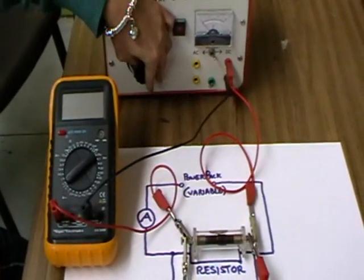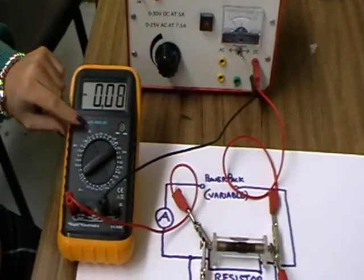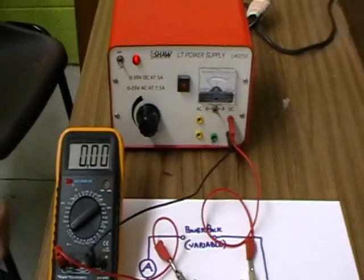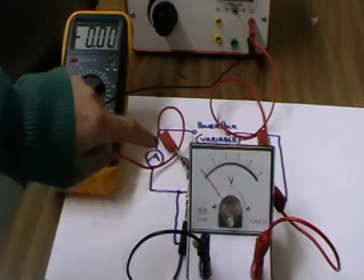Switch on the digital ammeter and the power pack. Make sure the dial on the power pack is at zero: potential difference zero, current zero.